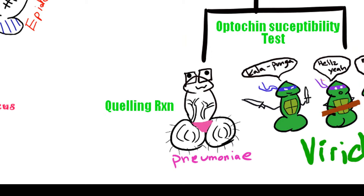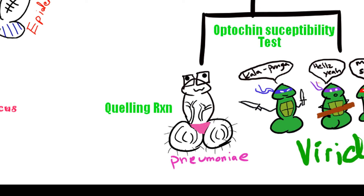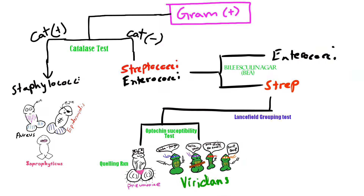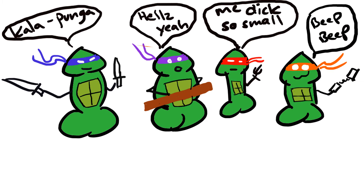For the quellung test, these organisms show up as negative because they have no capsule, unlike Streptococcus pneumoniae. So what organisms make up the viridans streptococci group? There are four big ones and they're pretty hard to remember.